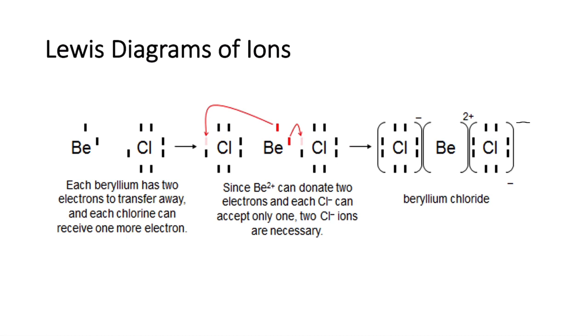Here's an example of beryllium chloride. We can see that beryllium has two electrons to transfer away, and each chlorine can receive one more electron. Because beryllium has two electrons but there's only one space to fit an electron on chlorine, we need a second chlorine to accept the second electron. So that's what's shown in this second diagram here. Since Be2+ can donate two electrons, and each chlorine ion can accept only one, two chlorine ions are necessary.